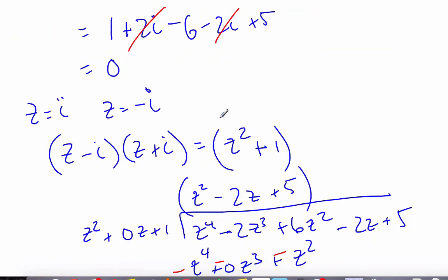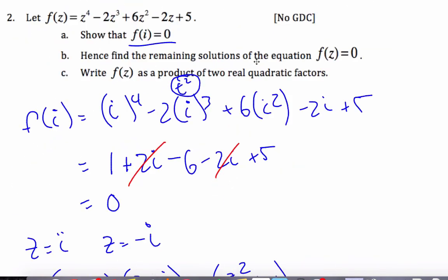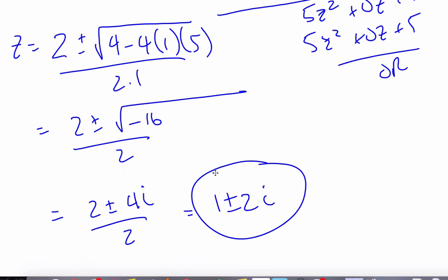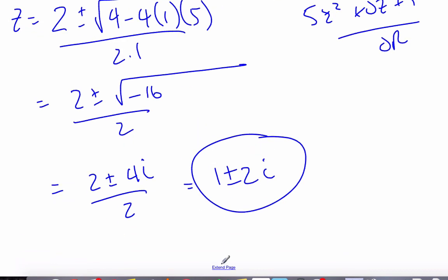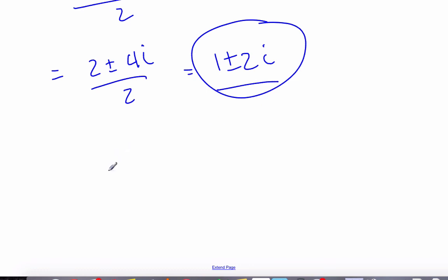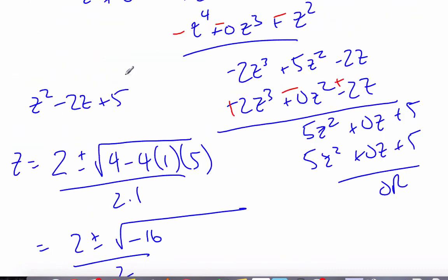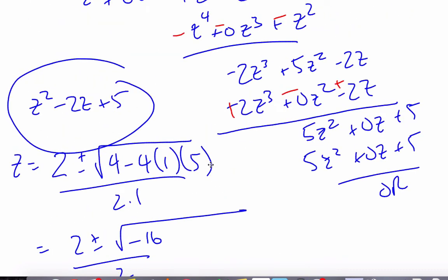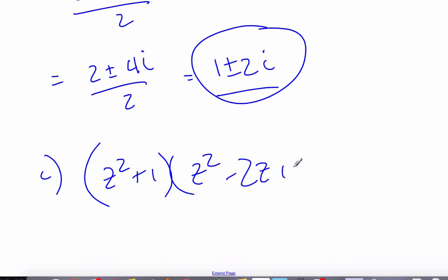And so the question now says find the remaining solutions of the equation. Well, I know here are two of my solutions, here are two more of my solutions, and there are the 4. The fundamental theorem says it'll be 4, and I have the 4. And then it finally says write as a product of quadratic factors. Well, I know this was one factor, and the second factor was this one here. And so it's z squared plus 1 times z squared minus 2z plus 5.